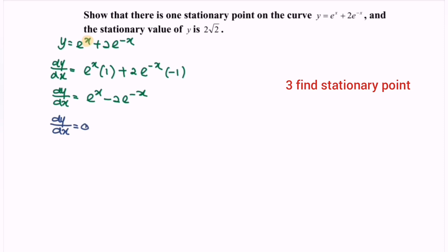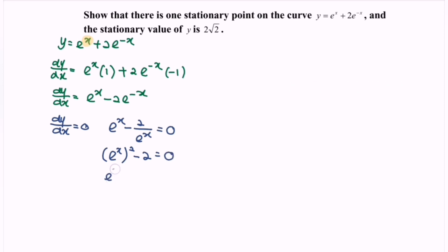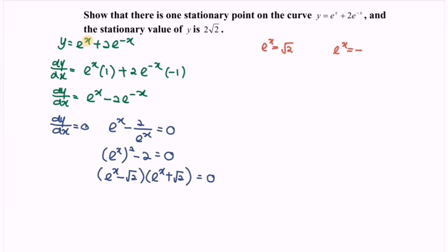Substitute: e^x − 2/e^x = 0. Multiply through by e^x, so we have (e^x)² − 2 = 0. Factorize: (e^x − √2)(e^x + √2) = 0. This gives e^x = √2 or e^x = −√2.